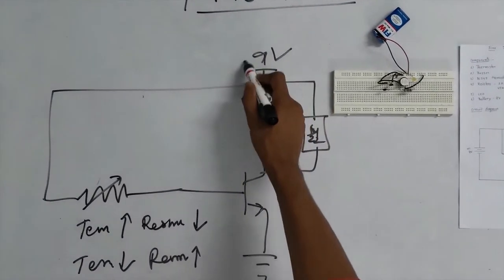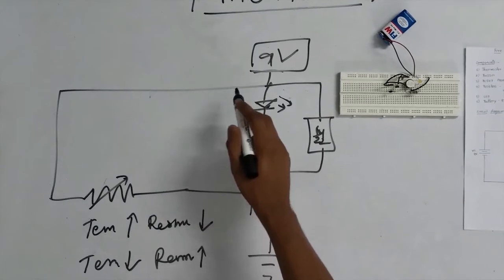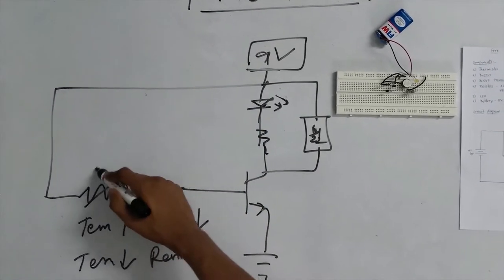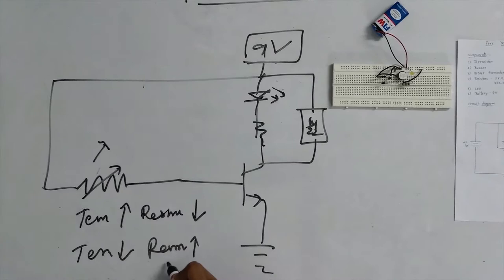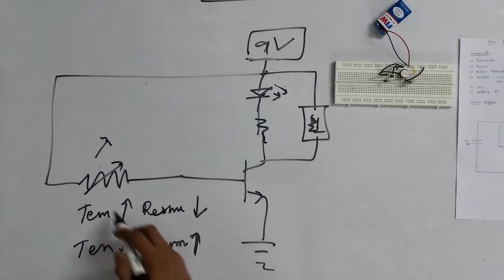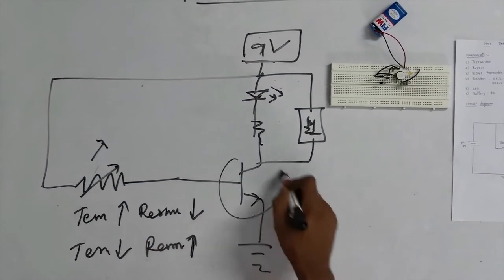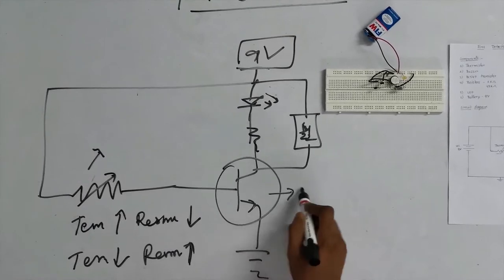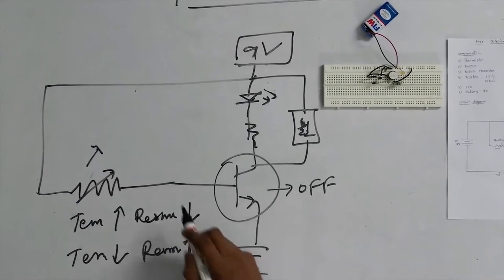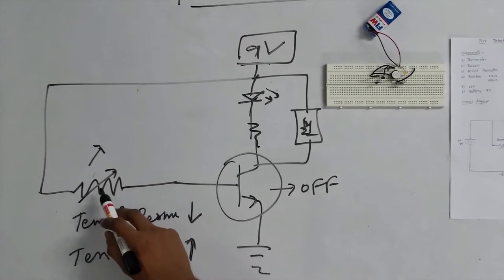As long as I give a supply of 9 volts in room temperature, the thermistor will have its impedance very high. So there is no connection for the transistor and the transistor will be in the off state as the circuit becomes open.